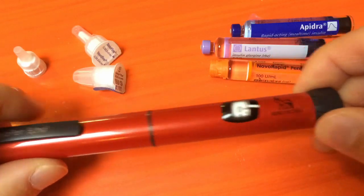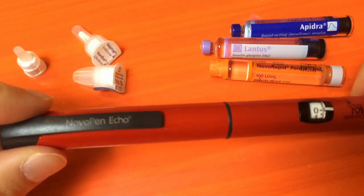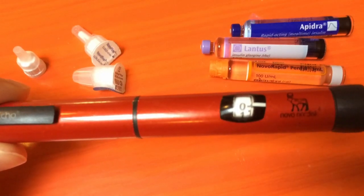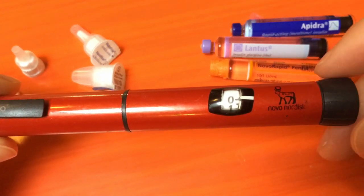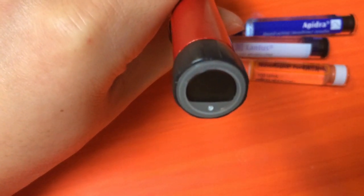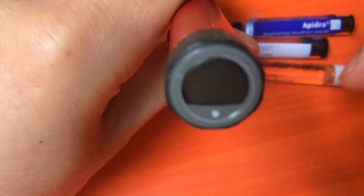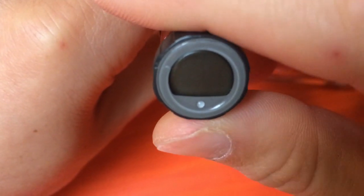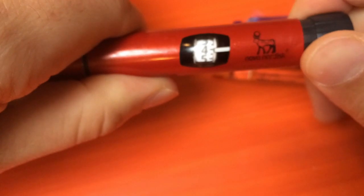If you haven't seen the NovoPen Echo before, it's a Nordisk pen that records how much insulin you took and how long ago you took it. When you dial in a certain amount of insulin, let's say 4 units,